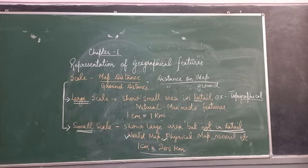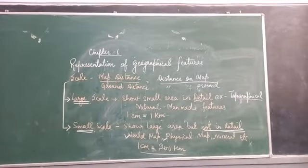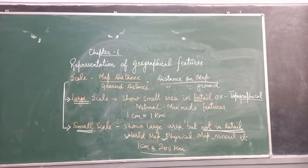To summarize: the scale of the map is map distance upon ground distance, categorized into two types — large scale and small scale. Large scale maps show a small area in detail, like topographical maps, where 1 cm equals 1 km. Small scale maps show a large area but not in detail, like world maps and physical maps, where 1 cm equals 200 km.